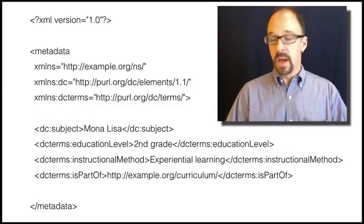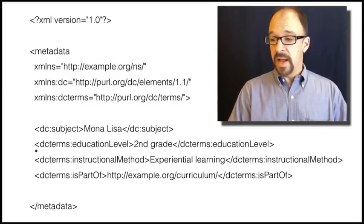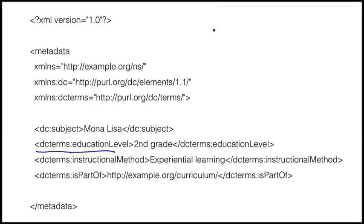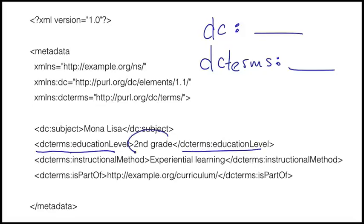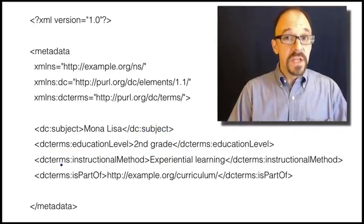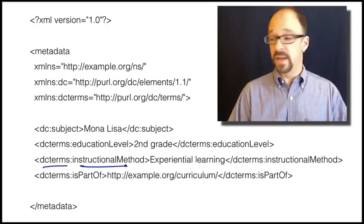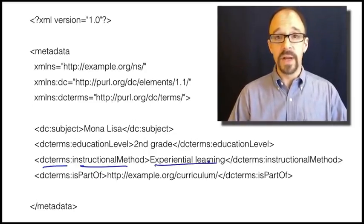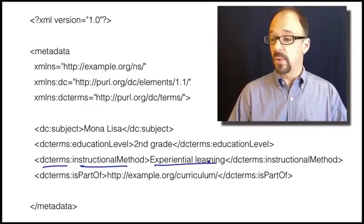But now we get into education level, and the syntax here is DC terms colon and then the term. So instead of DC colon, it's DC terms colon, and then whatever the term or element is. Then you have an open tag and a closed tag just like before, and then the value. In this case, second grade for the education level of the intended audience. You could use additional terms, DC terms instructional methods, say experiential learning.